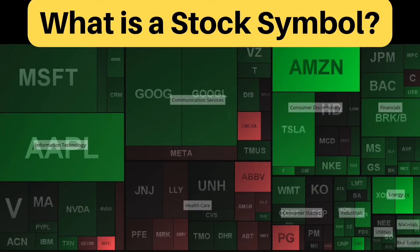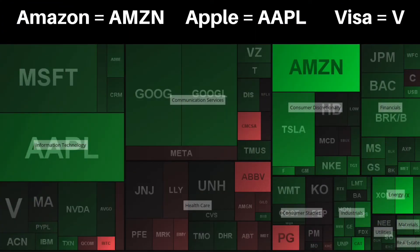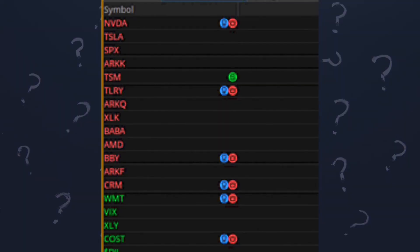Another important term to know is stock symbol. A stock symbol is an arrangement of characters, usually letters, representing publicly traded securities on an exchange. Each and every publicly traded company has a separate set of symbols. As you see here, Amazon is A-M-Z-N, Apple would be A-A-P-L, and Visa will be V. Currently, there are over 8,000 stock symbols on the U.S. stock exchange.